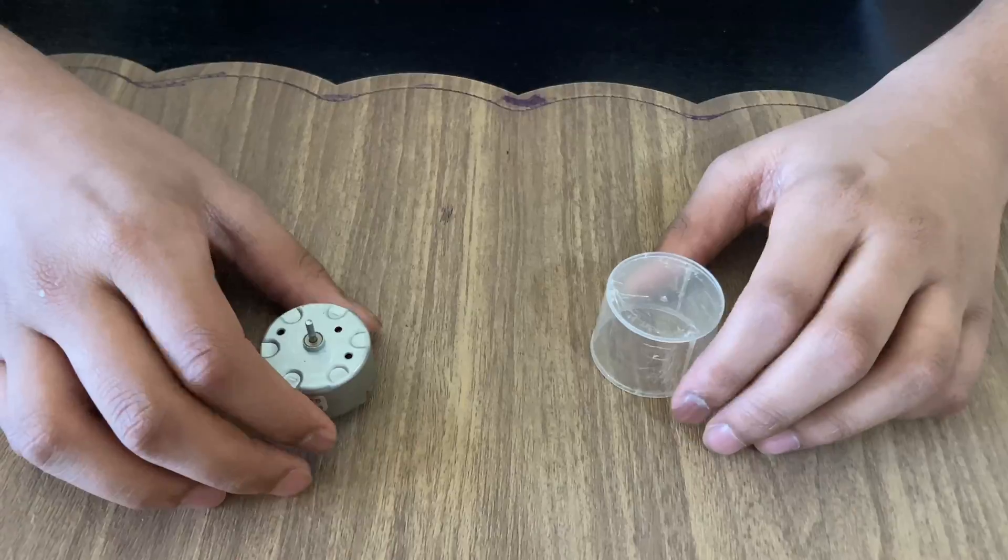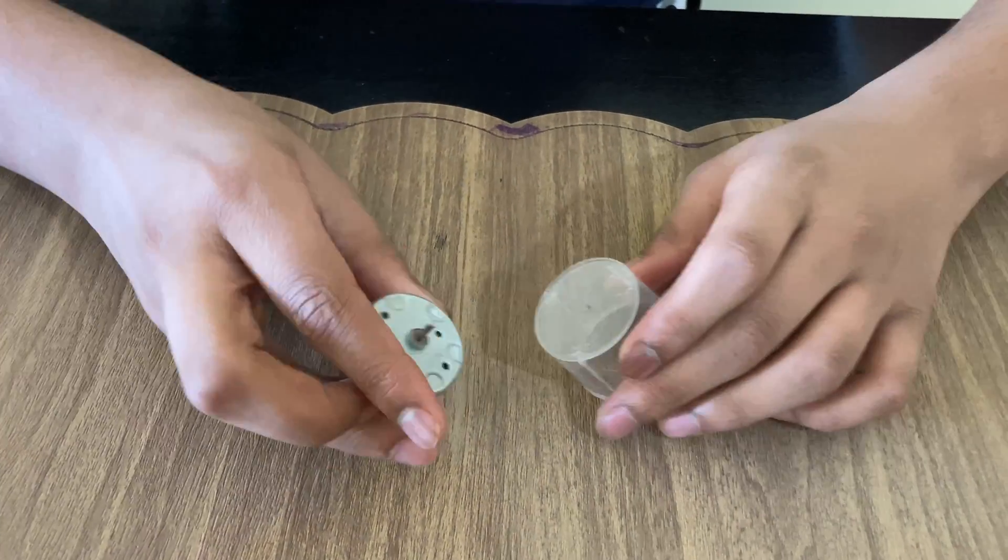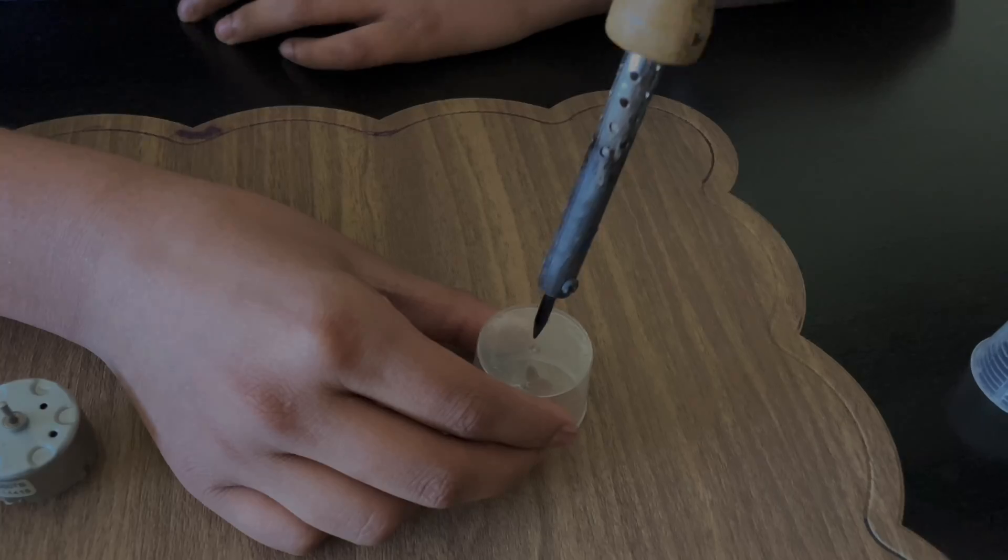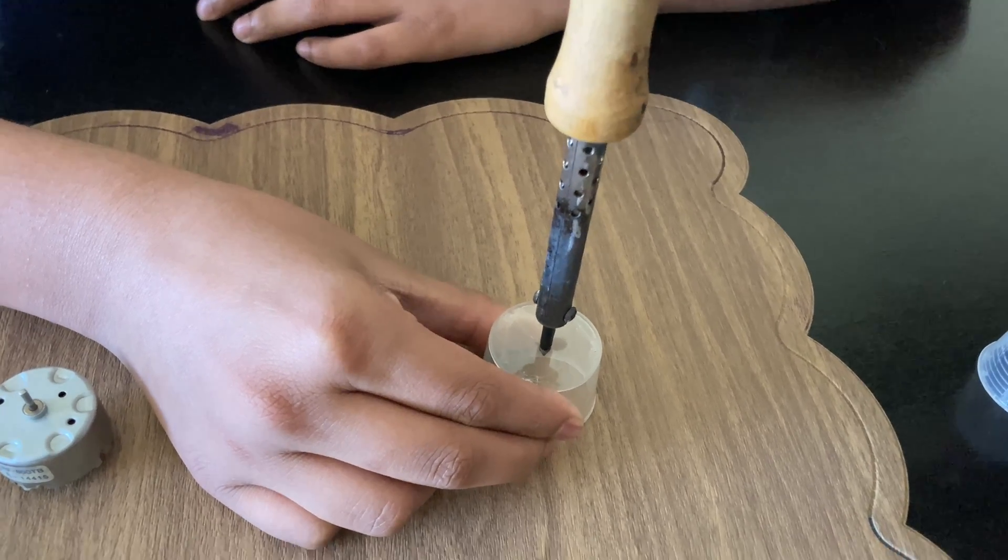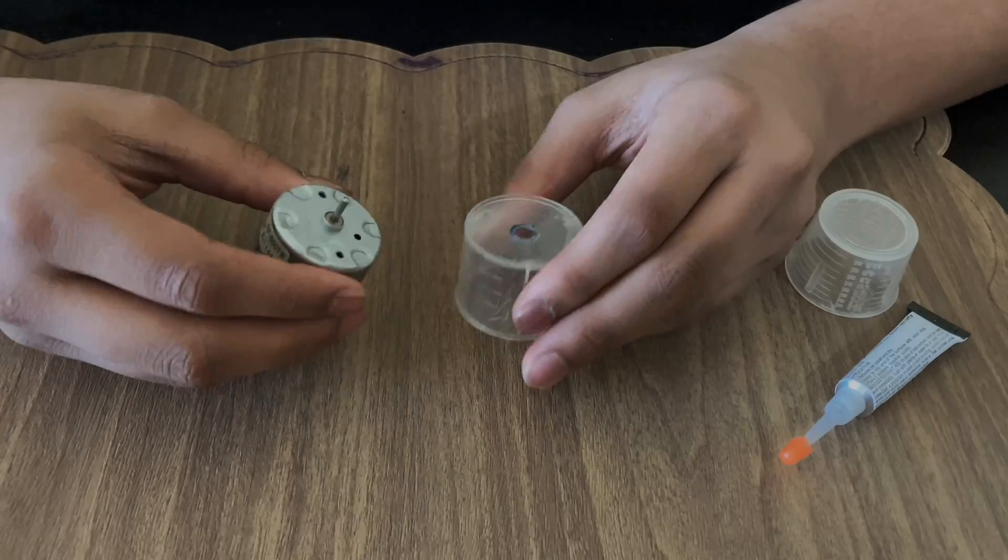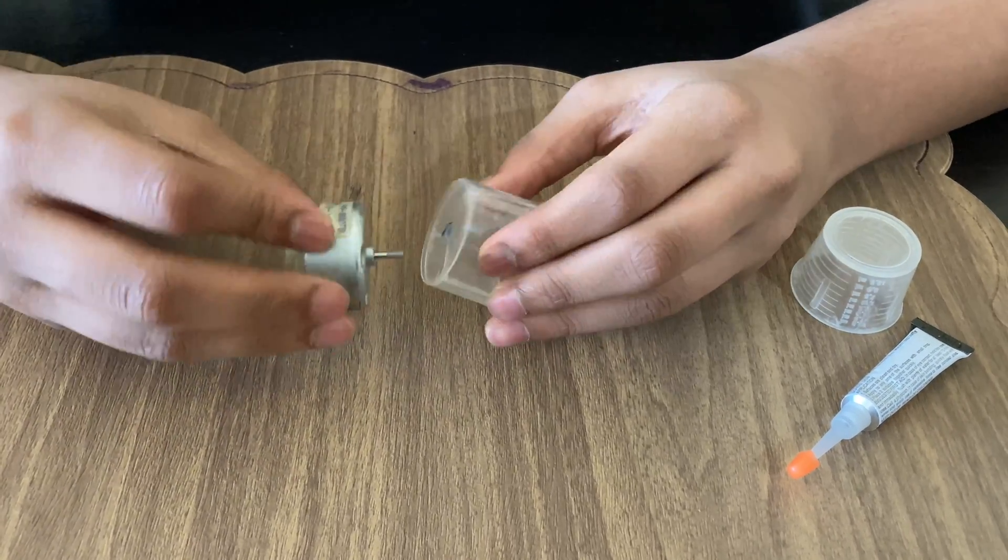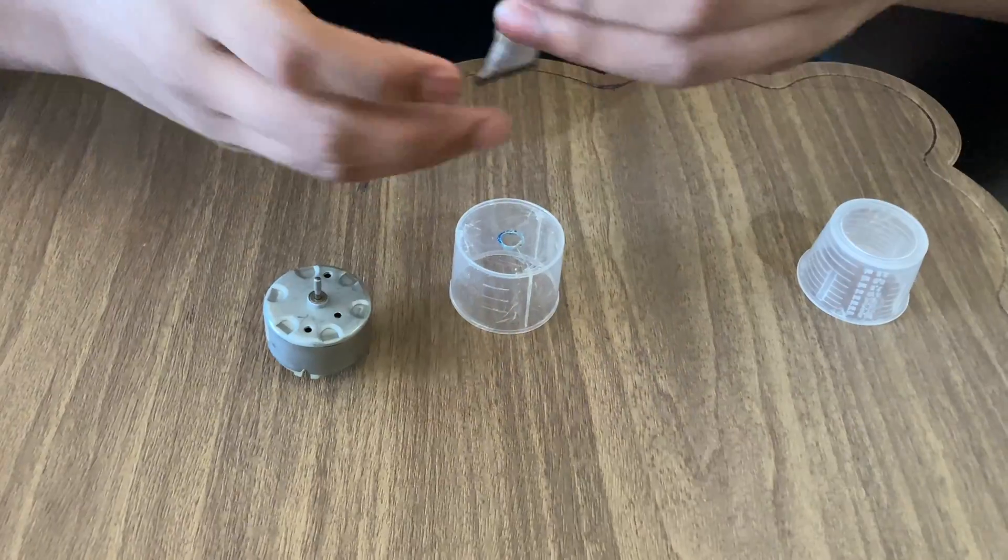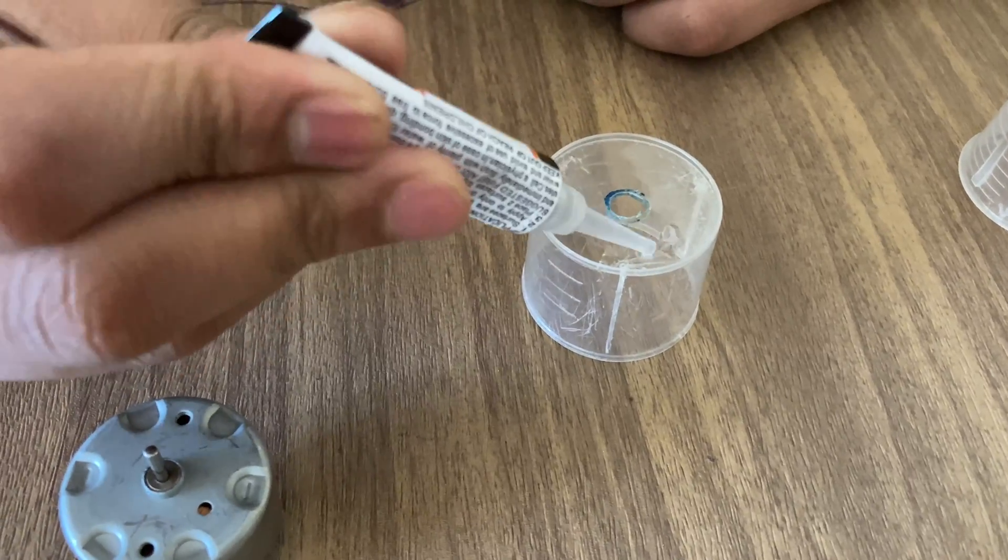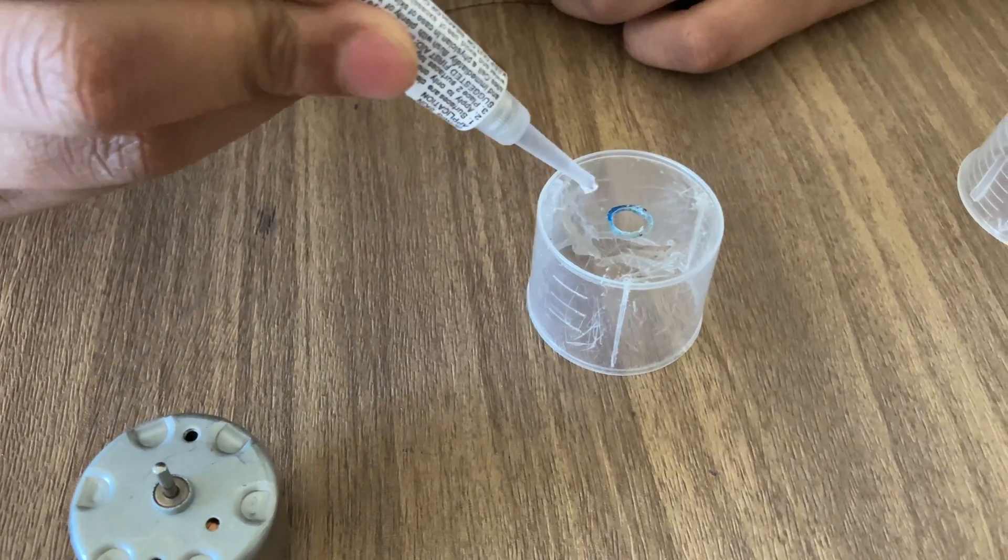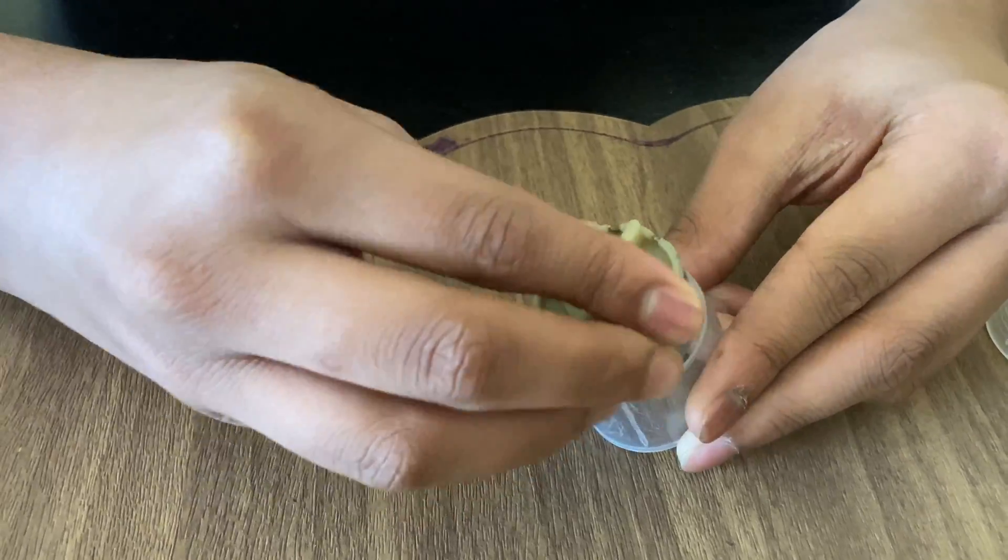Now I'm going to make a hole here with a soldering iron so I can fix the motor. So now I've made the hole, I'm going to fix the motor in the cap with super glue.